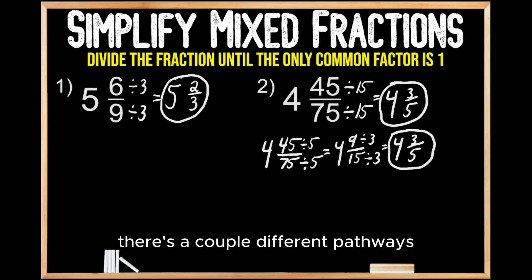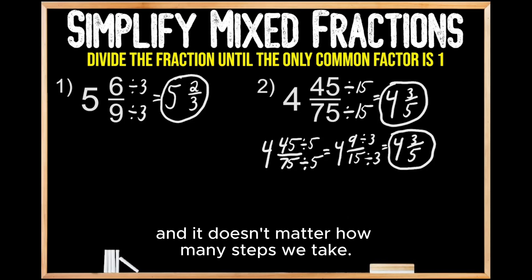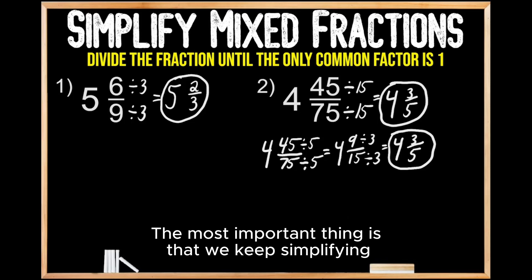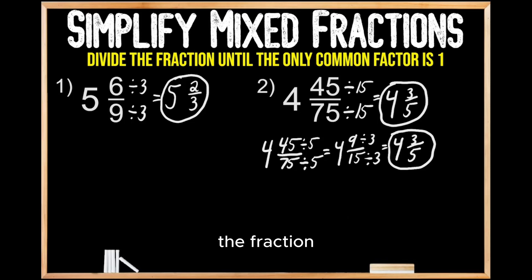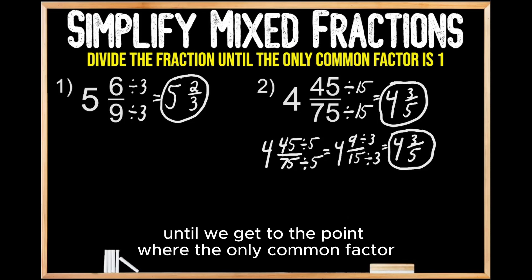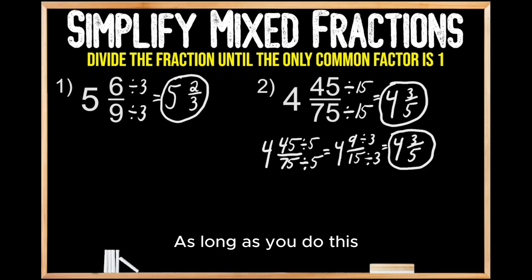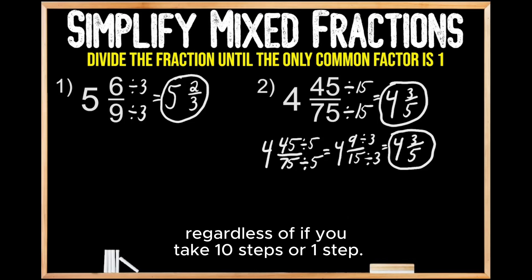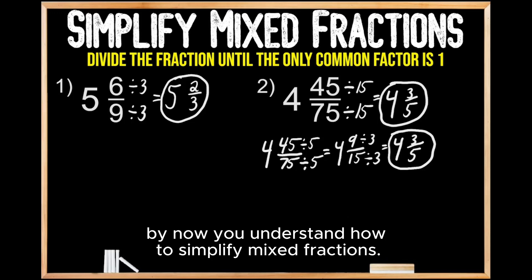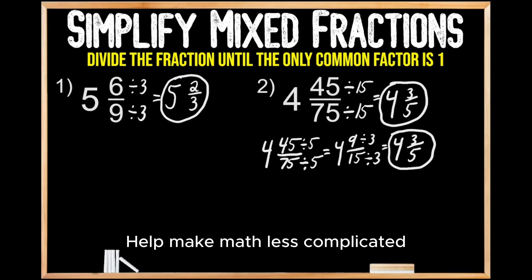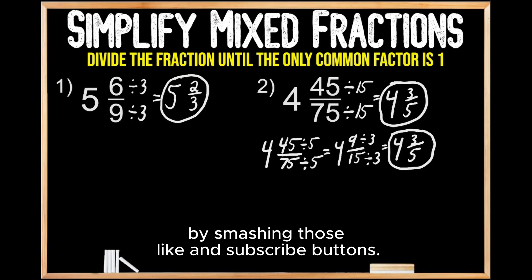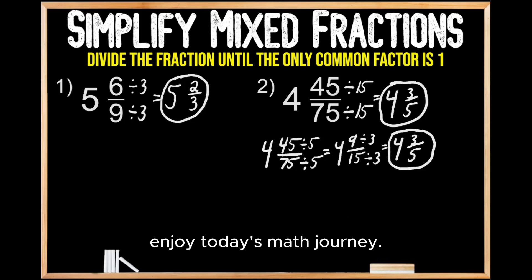As we can see, there are a couple of different pathways for us to get to the same answer, and it doesn't matter how many steps we take. The most important thing is that we keep simplifying the fraction until the only common factor between the denominator and the numerator is one. As long as you do this, you're going to get the same answer regardless of whether you take ten steps or one step. Hopefully by now you understand how to simplify mixed fractions. Help make math less complicated by smashing those like and subscribe buttons. As always, enjoy today's math journey.